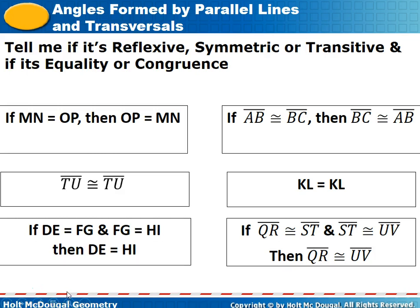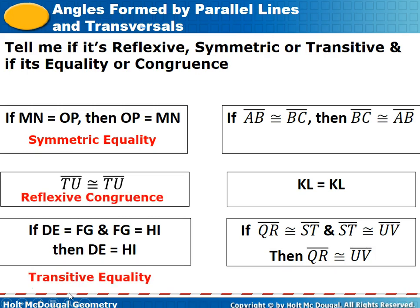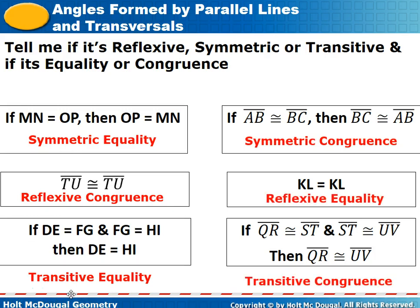This was our review from yesterday: symmetric of equality, reflexive of congruence, transitive of equality, symmetric of congruence, reflexive of equality, and transitive of congruence. Reflexive has to do with one thing on either side of the symbol. Symmetric has to do with two things, and transitive has to do with three. Whether it's congruence or equality is determined by whether there's an equal sign or a congruence symbol.